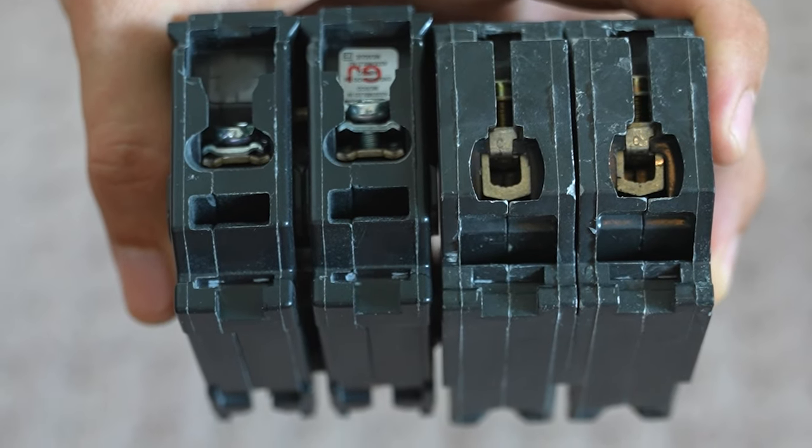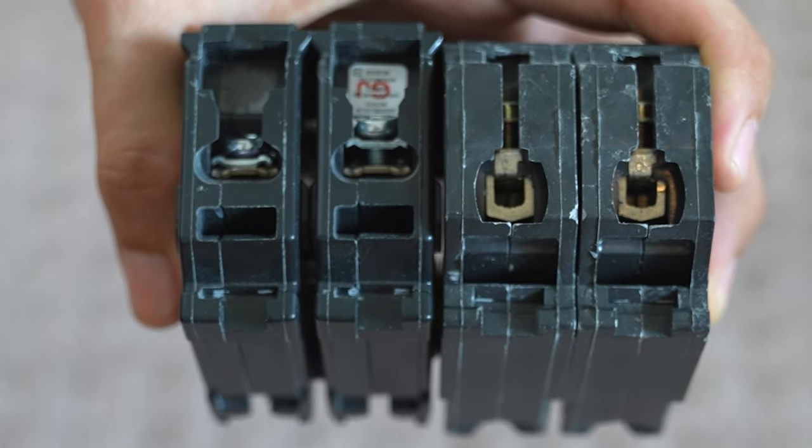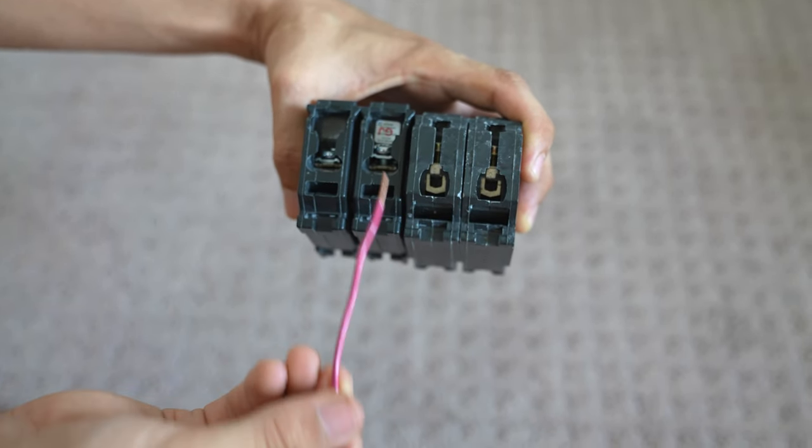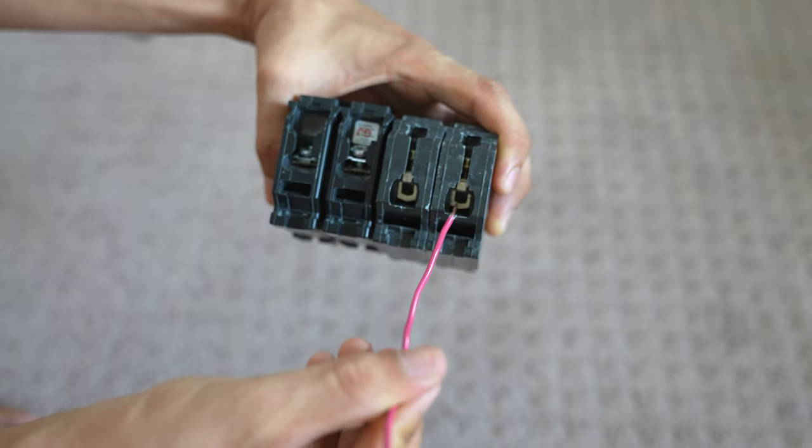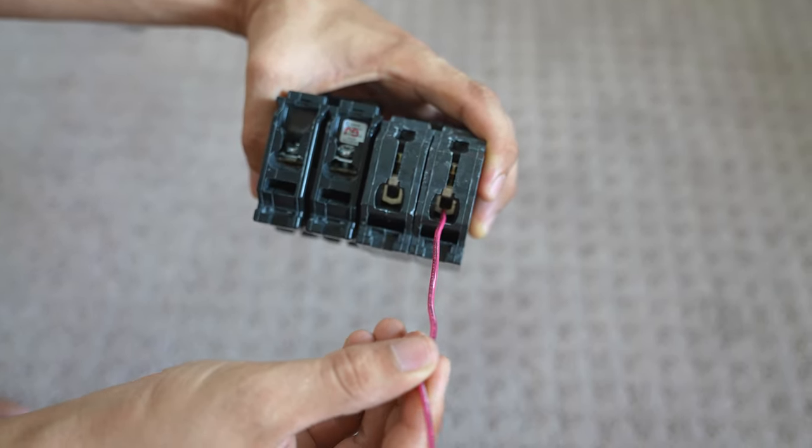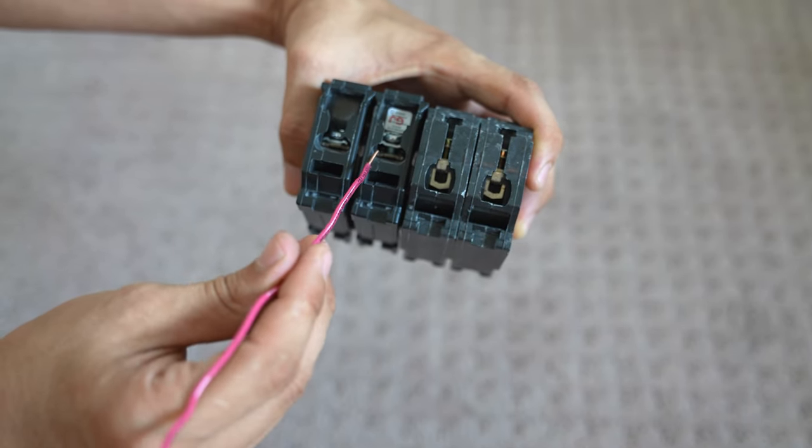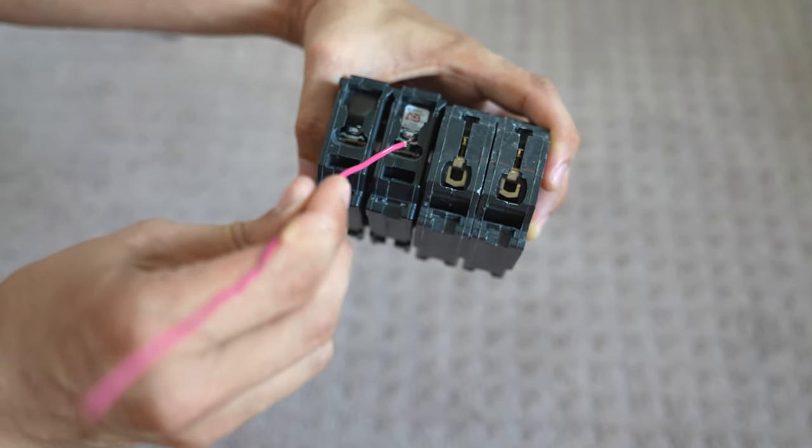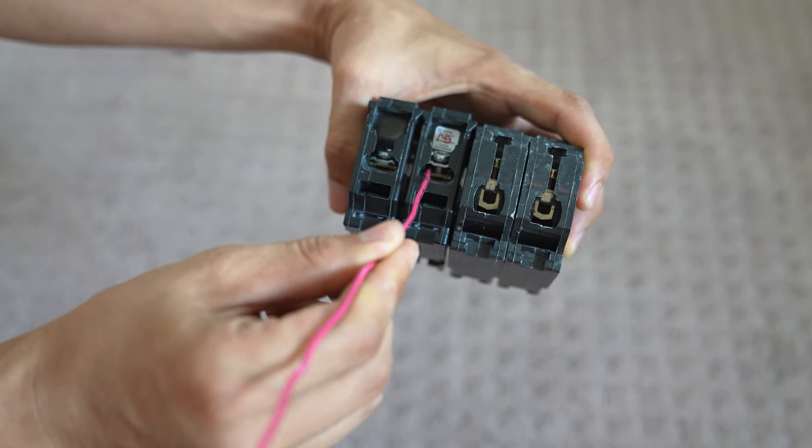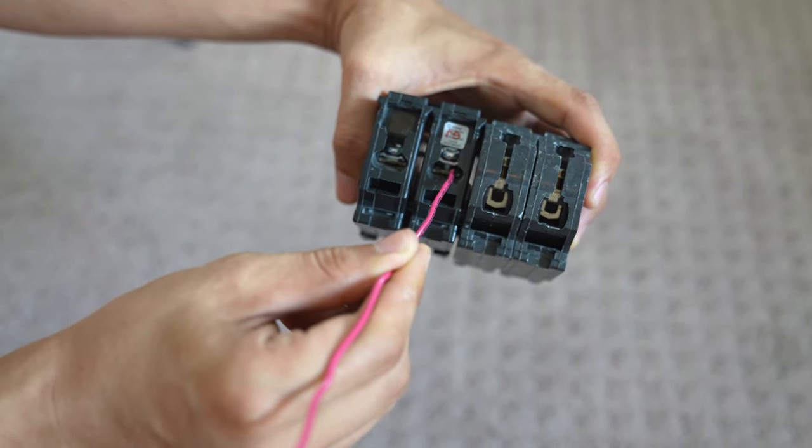There's two main kind of screw terminals on these breakers. One of them have these plates, and the other ones have this clamp-down feature. So the clamp-down ones are really easy. You just put the wire in the hole, and as you're screwing the screw in, it clamps down on the wire. Whereas these plate ones, you just have to make sure that you're not putting it under the screw, but you're actually putting it in between the plates, the wire, and then you screw it down.